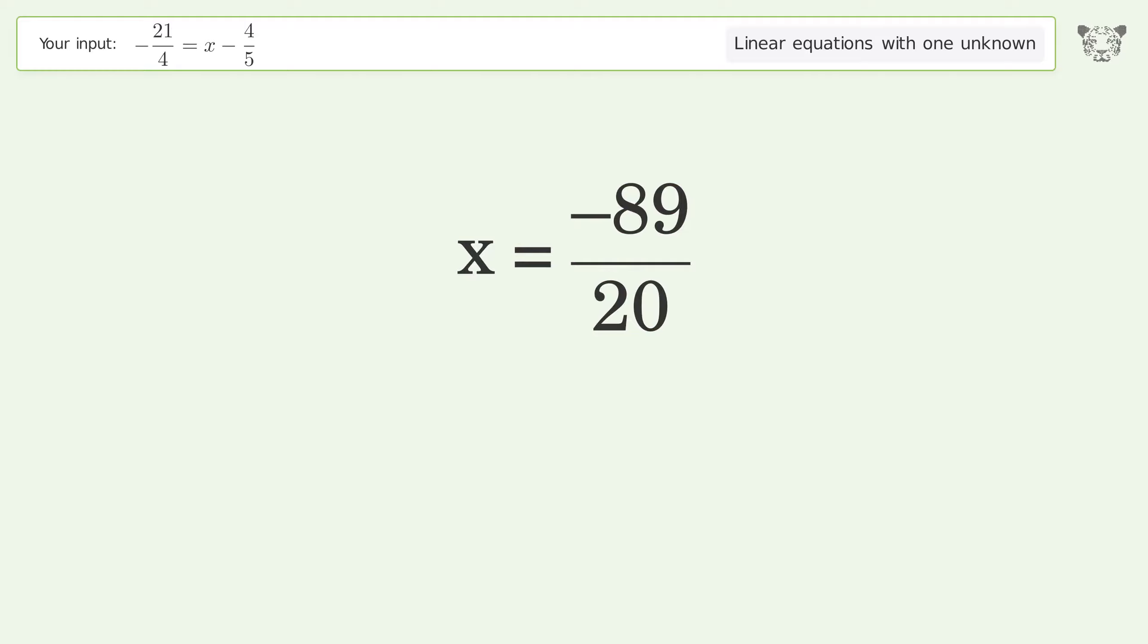And so the final result is x equals negative 89 over 20.